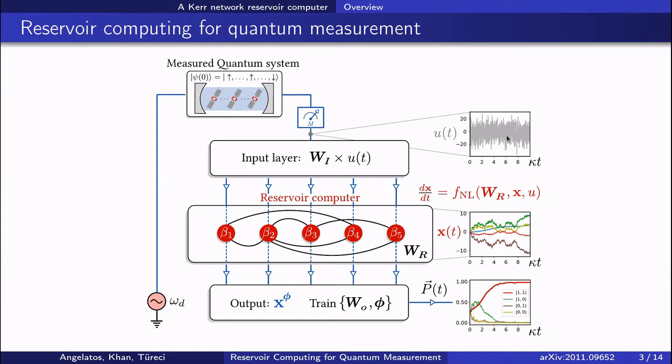The Kerr network will then evolve under this input current, as depicted here. And the output formed from a linear combination of these oscillator quadratures is the probability that this measured quantum system was in each of its possible states.